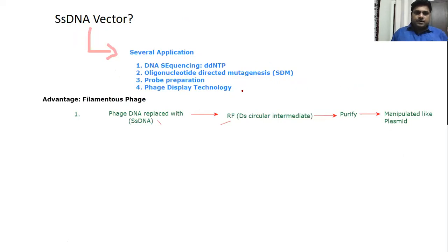Now coming to advantages of filamentous phage. This filamentous phage DNA is single-stranded DNA in the native stage. When it infects E. coli cells it converts to the replicative form, which is double-stranded circular intermediate form. This can be purified just like a plasmid and manipulated also just like a plasmid.